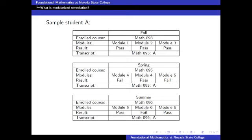In the summer semester, he will enroll in math 96 because he's starting in module five. And let's say he passes module five, and then passes module six after two attempts. He will receive an A for math 96.